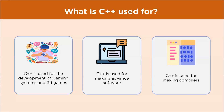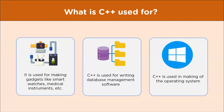C++ is used for making compilers because it is considered closer to the hardware. That proximity also makes it preferred for making gadgets like smartwatches and medical instruments. It is also used for making database management software — for example, MySQL is written in C++. C++ also plays a part in writing operating systems; Microsoft Windows and macOS have some parts written in C++.